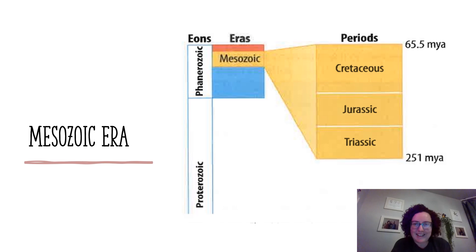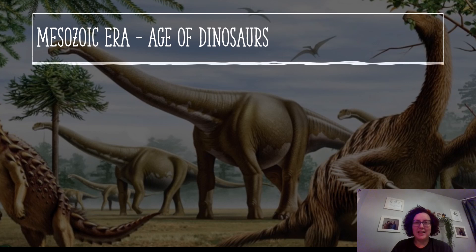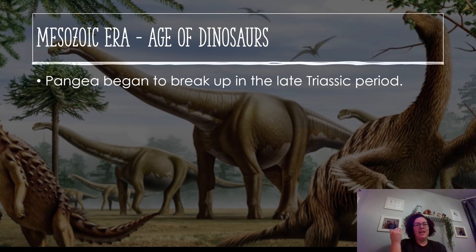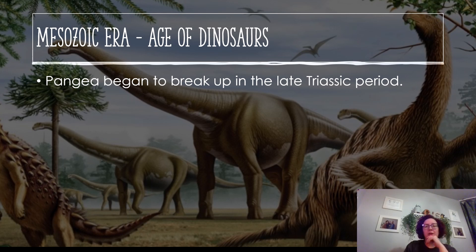The Mesozoic era — this is our age of dinosaurs. We have the Triassic, Jurassic, and Cretaceous periods, from about 250 million years ago to 65.5 million years ago. Pangaea starts to break apart during the late Triassic. Dinosaur life really started after the great Permian extinction, and clearly life was able to come back — and it came back big.